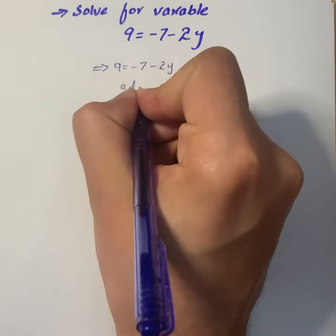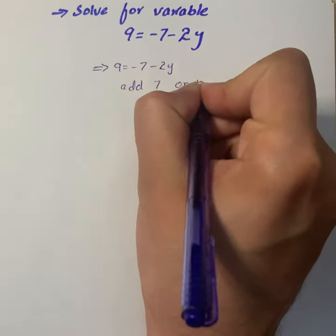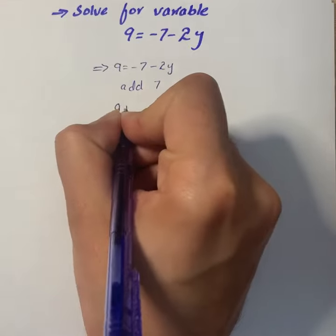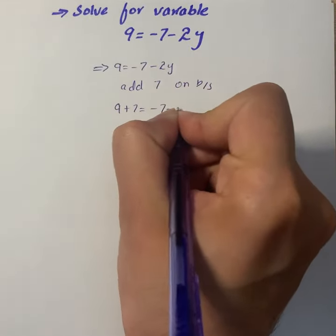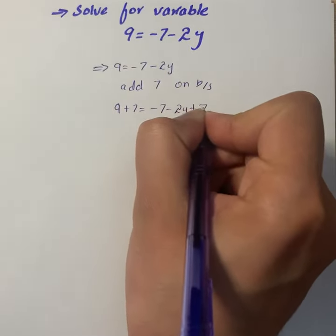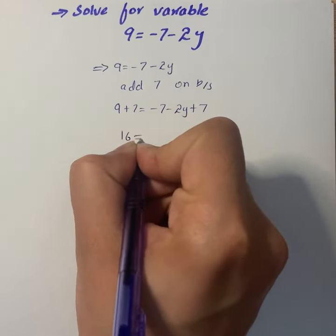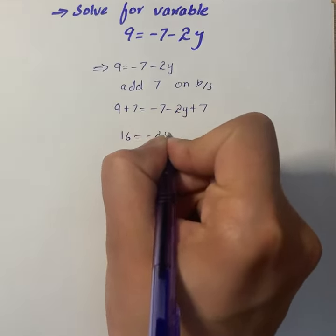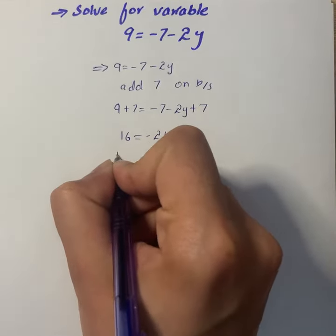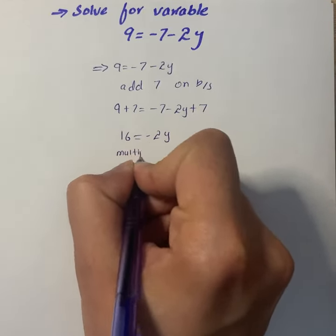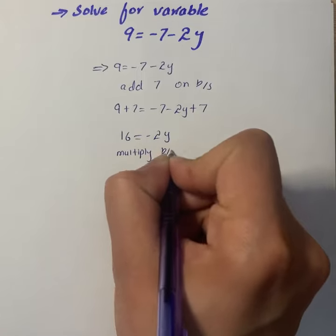So the first step that we're going to do over here is we will add 7 on both sides. That will give us 9 plus 7 equals minus 7 minus 2y plus 7, so it becomes 16 equals minus 2y.